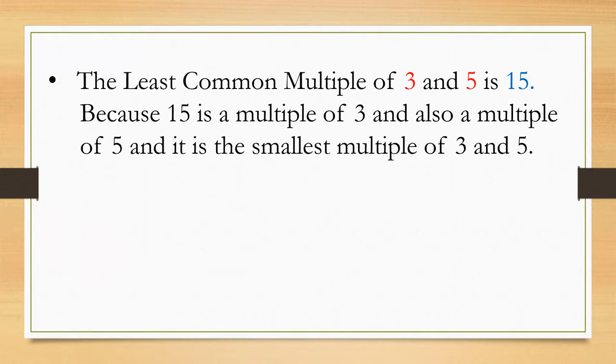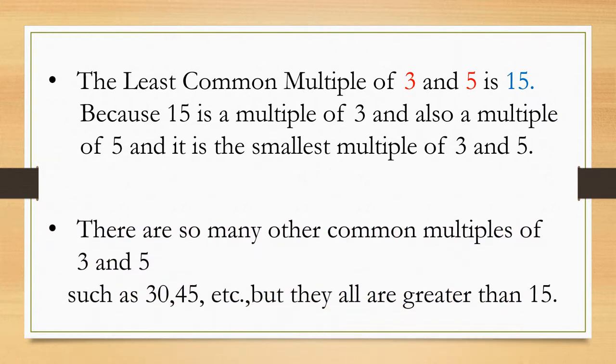The least common multiple of 3 and 5 is 15 because 15 is a multiple of 3 and also a multiple of 5, and it is the smallest multiple of 3 and 5. There are so many other common multiples of 3 and 5 such as 30, 45, etc., but they all are greater than 15.